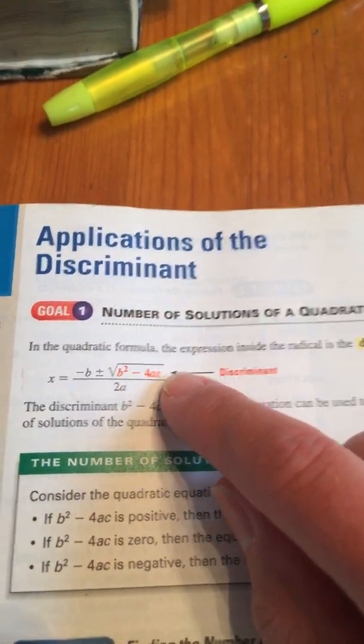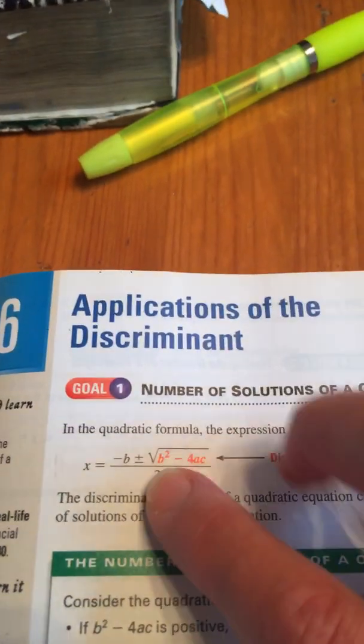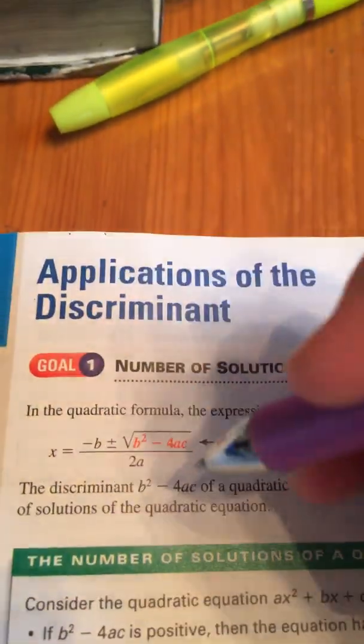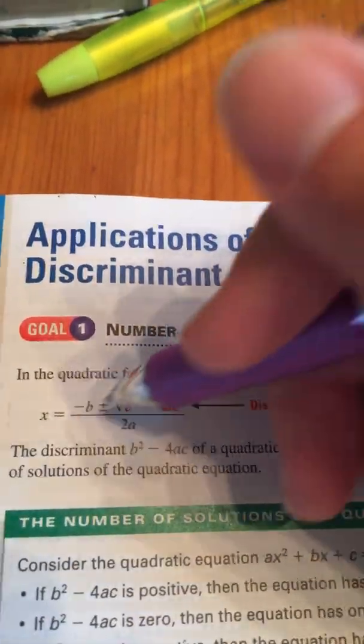And it was a big old pain, and I'm slightly dyslexic. It was real easy for me to make a little mistake and mess it up. But one of the things we would do is we would look at this part of the equation, which is called the discriminant. It has a special name.